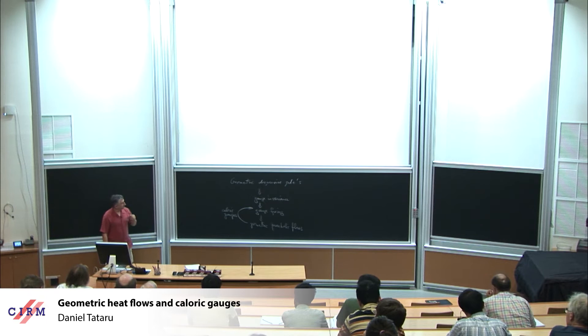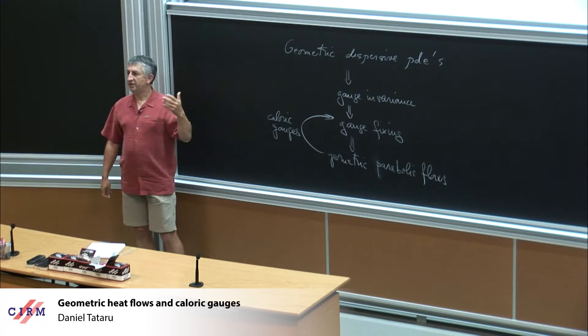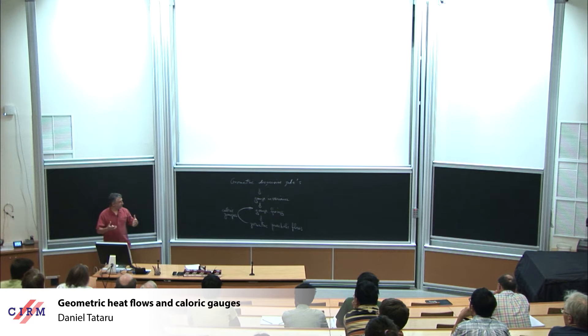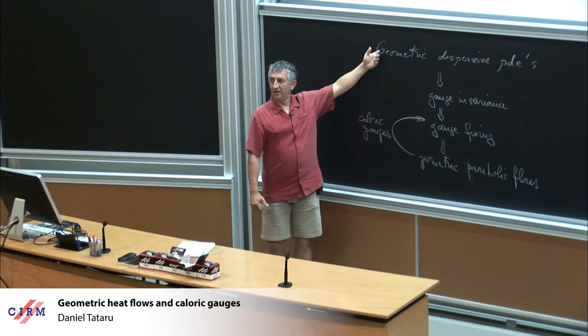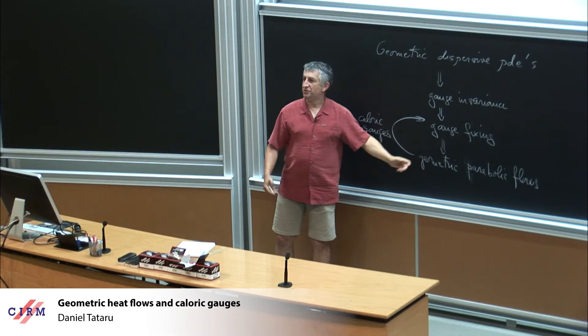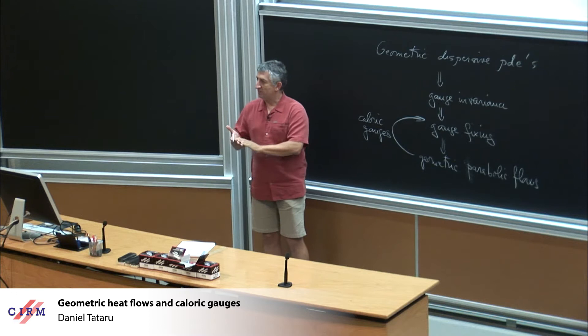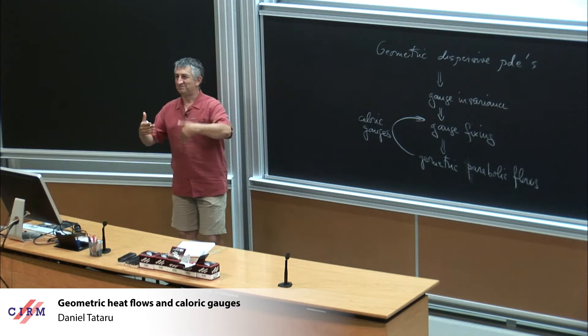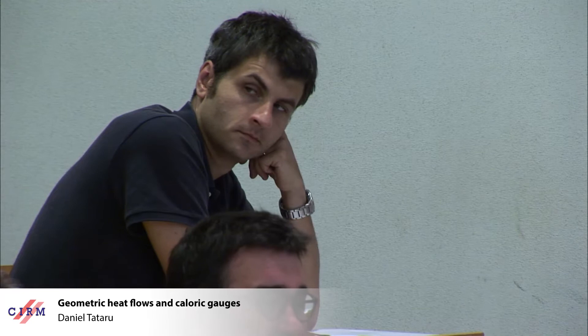This class of gauges we're going to call caloric gauges. What I hope you'll get to understand by the end of this story is: why do we care about these caloric gauges? How do we use them? And why do we need them in the first place? Because there are plenty of gauge choices which have nothing to do with the caloric gauges. Caloric gauges are intrinsically somewhat more complicated, because imagine you have some equation that you're trying to solve, and in the process of solving it, you need to perform some procedure related to solving yet another equation.